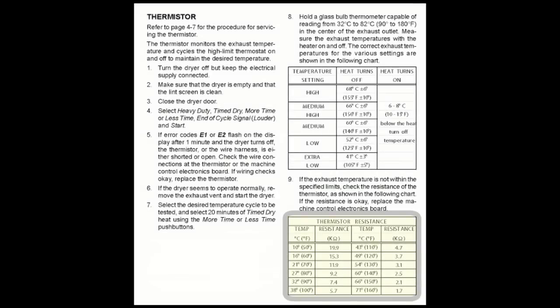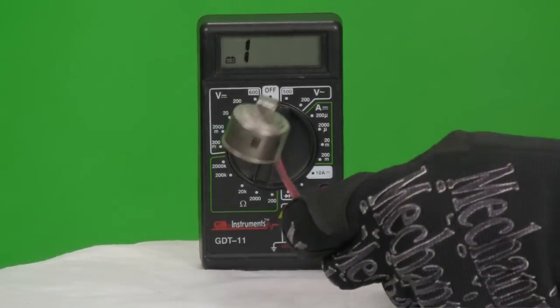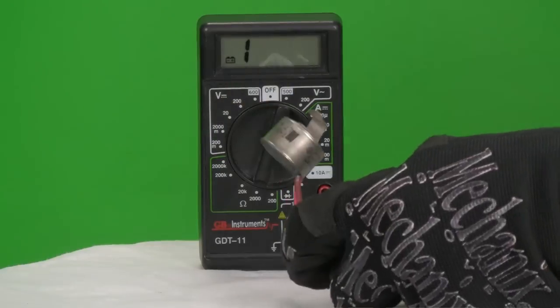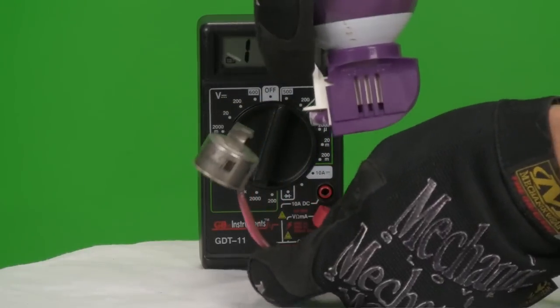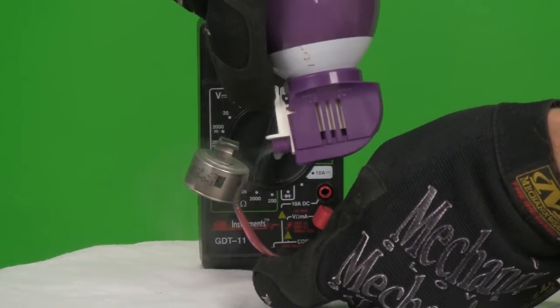Correct temperature to resistance charts can usually be found in the appliance's wiring diagram or technical sheet, generally located somewhere on the appliance. Other devices simply open or close at a particular temperature range. The key is to understand what the component should be doing and using a little logic.